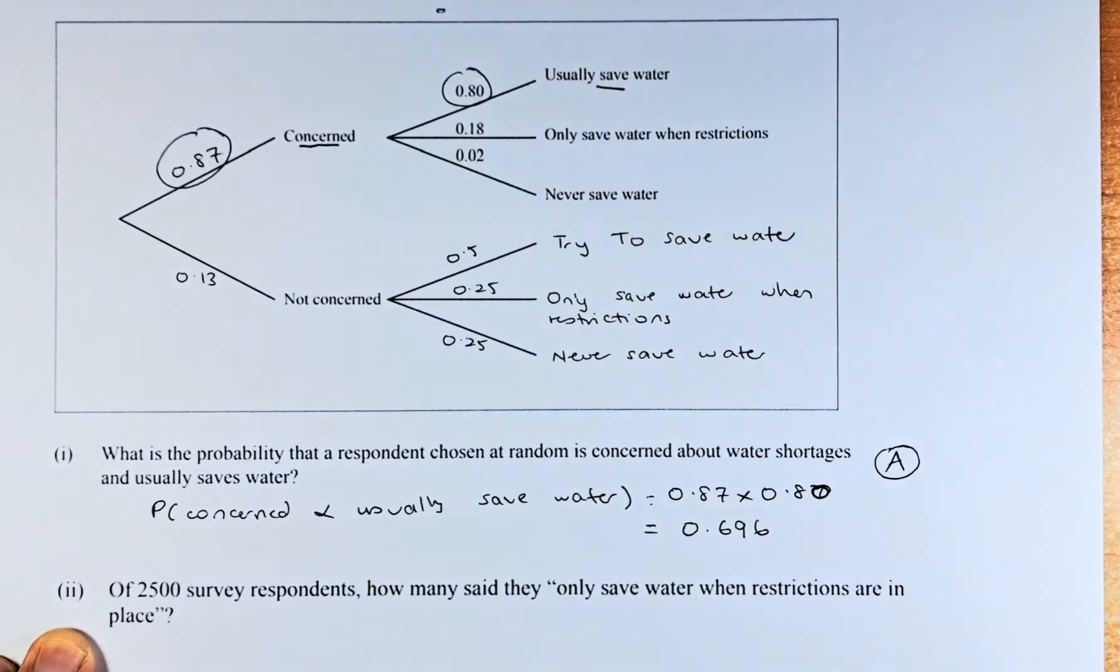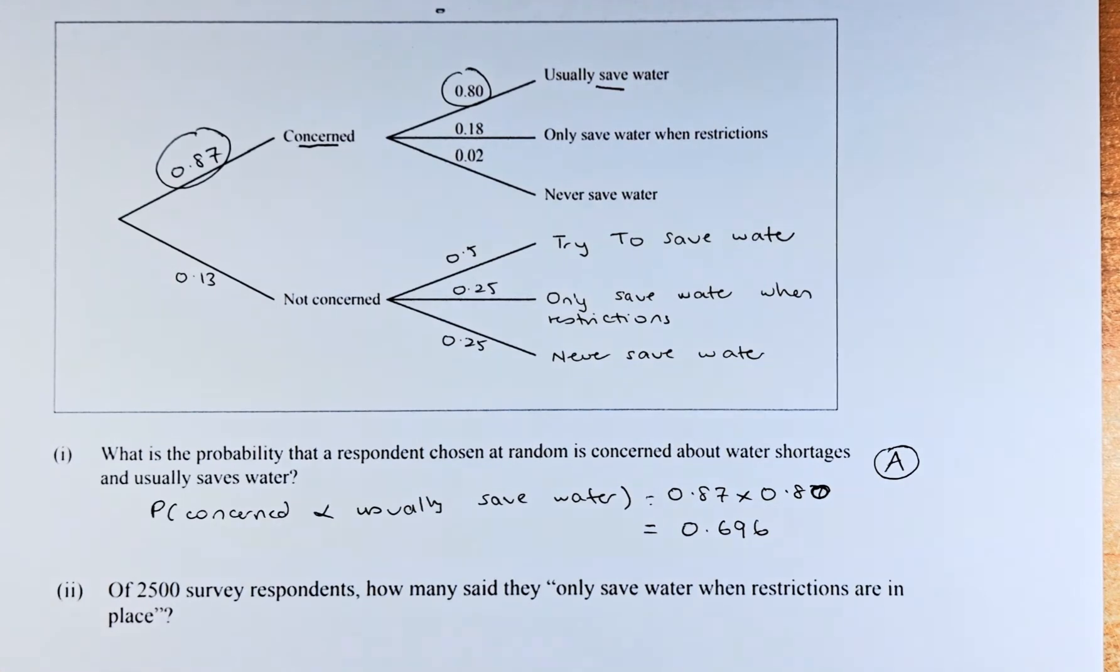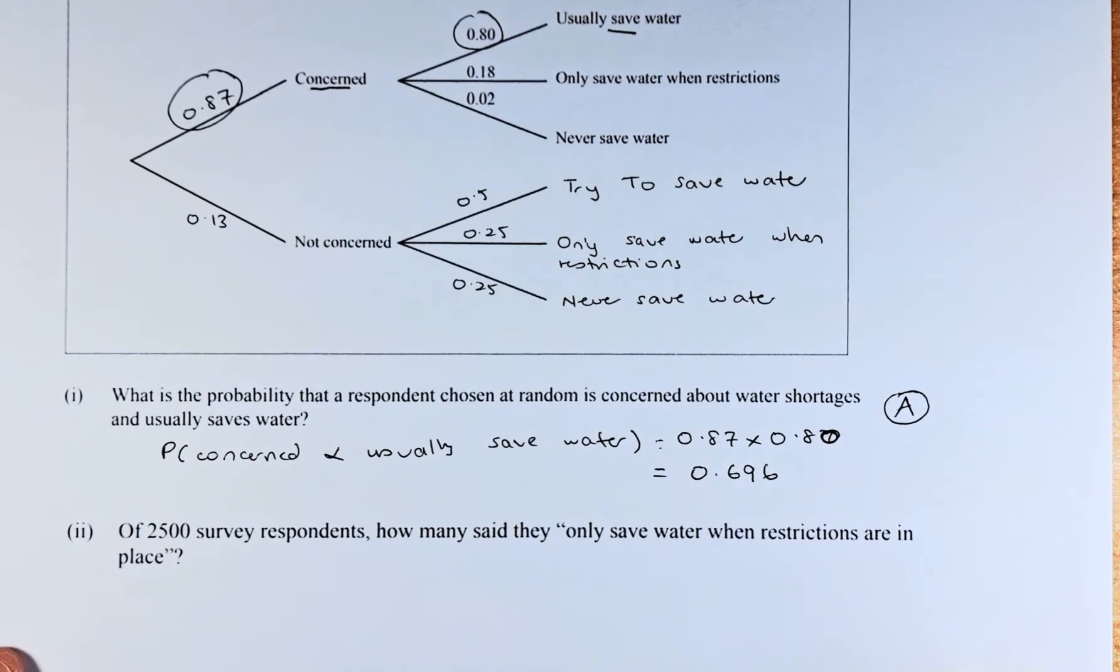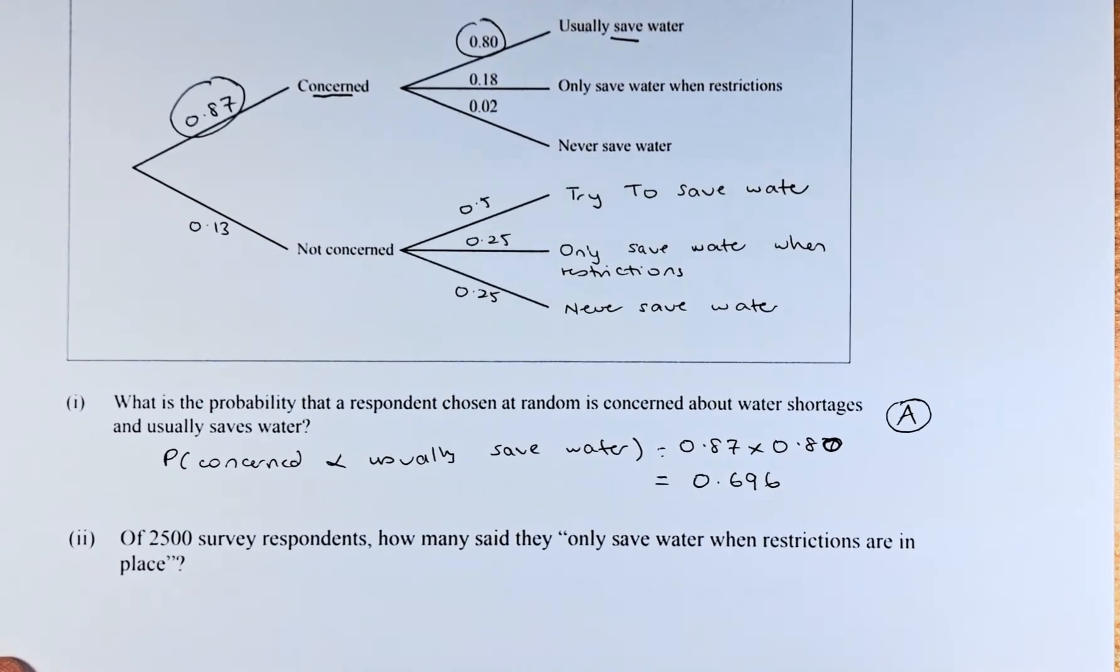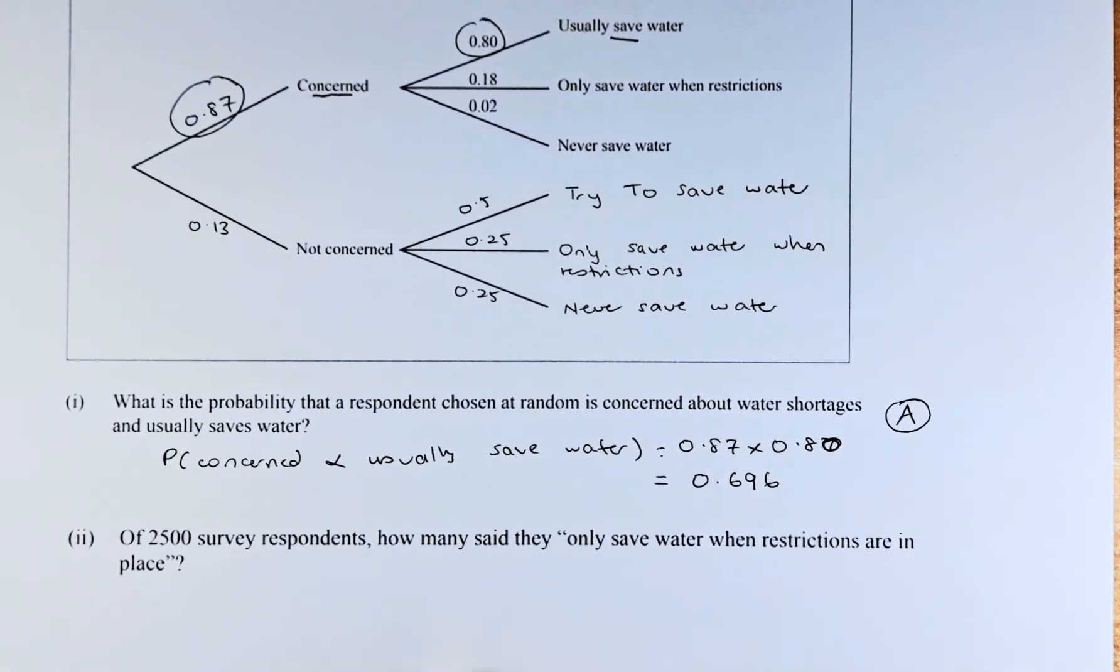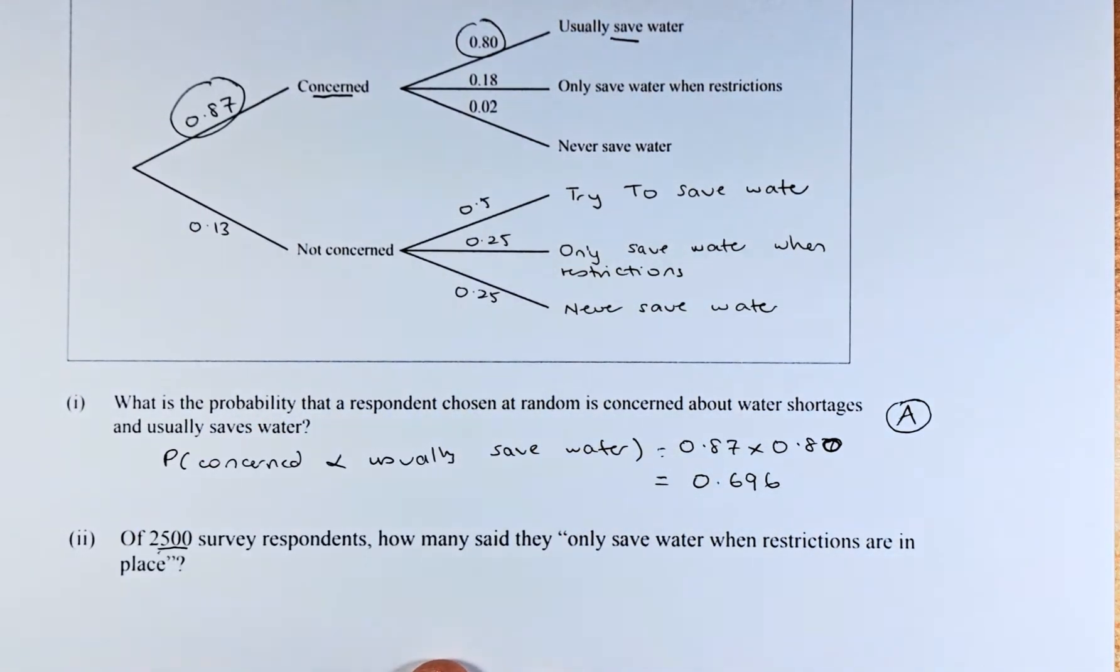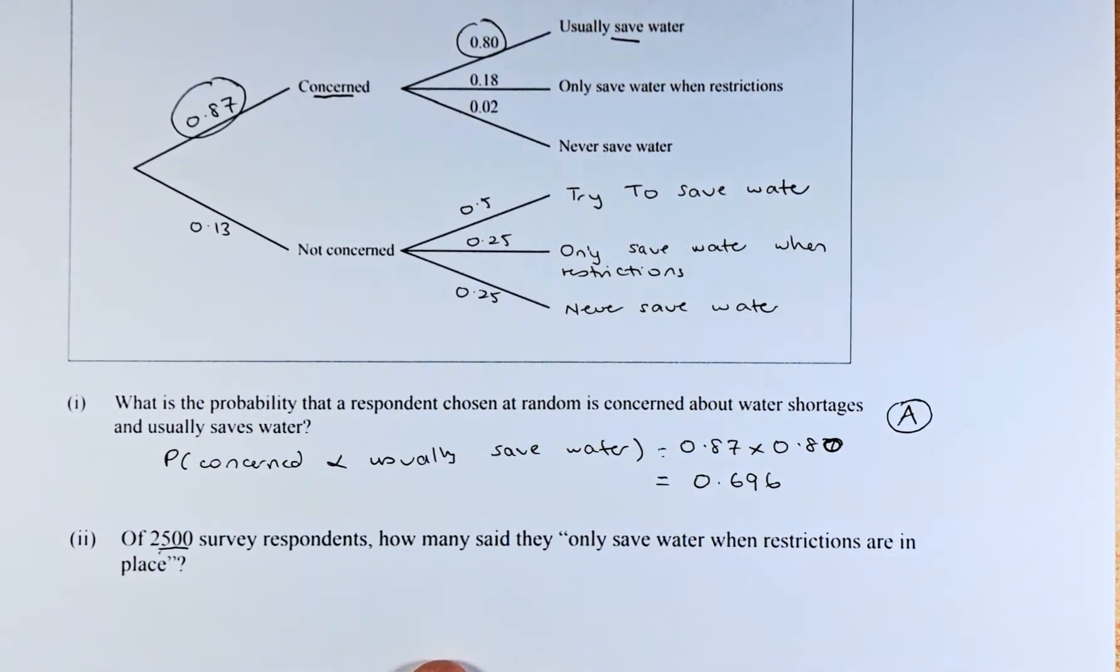Now, we shall look at the second part of the question, which is the merit. Hopefully, you can see the tree diagram. Of the 2,500 respondent survey, these are about New Zealand survey. How many said they only save water when restrictions are in place?